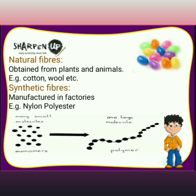A synthetic fiber is a chain of smaller units which are joined together. Each small unit is a chemical substance called a monomer. Many such smaller units or monomers join together to form a large single unit called a polymer.